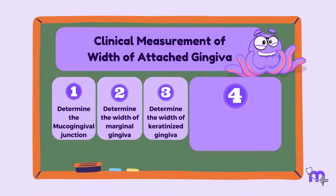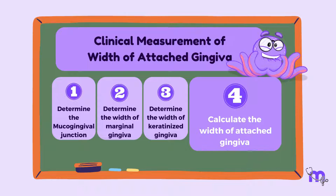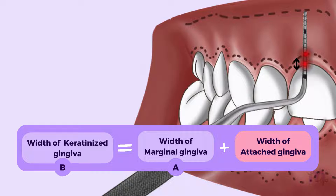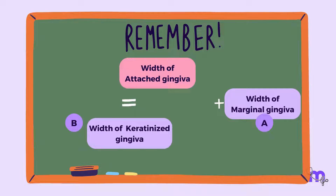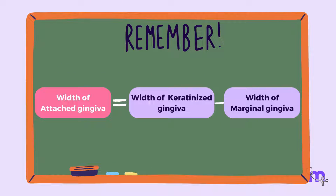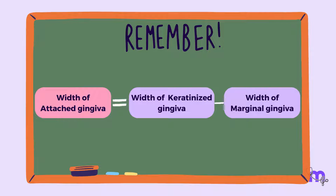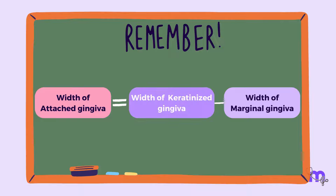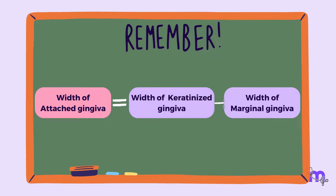The final or fourth step involves calculating the width of the attached gingiva. The width of the keratinized gingiva is equal to the sum of the width of the marginal gingiva and the width of the attached gingiva. Therefore, the width of the attached gingiva can be calculated by subtracting the width of the marginal gingiva from the width of the keratinized gingiva, which is B minus A.